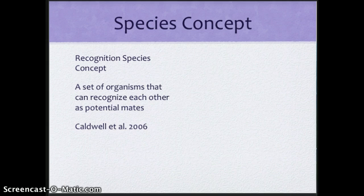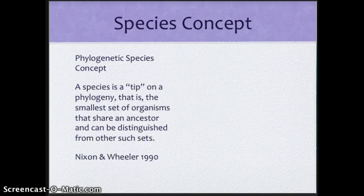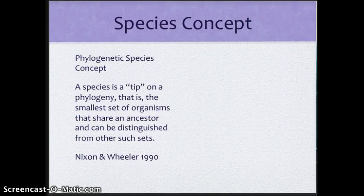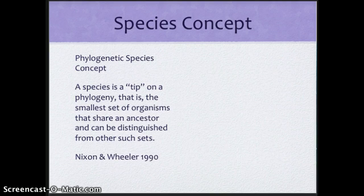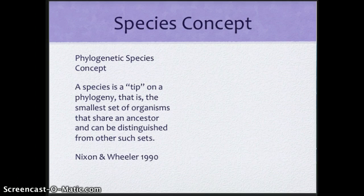So we start to add more pieces to it. And probably the most recent and most used species concept that's being used right now is what we call the phylogenetic species concept. And this is where we're actually going to be going in our next class. And it says that a species is a tip on the phylogeny. That is, the smallest set of organisms that share an ancestor and can be distinguished from other such sets. Well, how do we distinguish from other such sets? Well, now we're getting down to DNA.